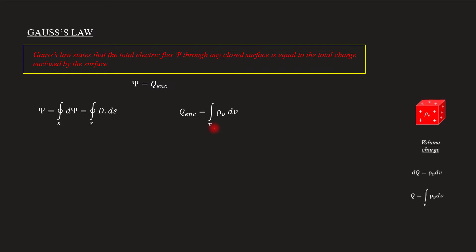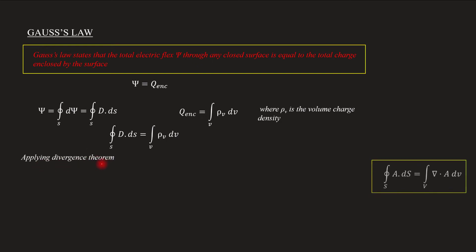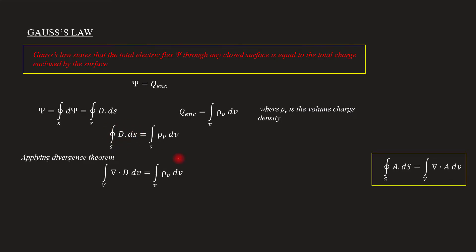The volume charge distribution is given by the expression inside the closed surface. Q enclosed is expressed as the volume charge density rho_v. We can consider this as a volume charge distribution, so these become integrals over volume V of del dot D dV.